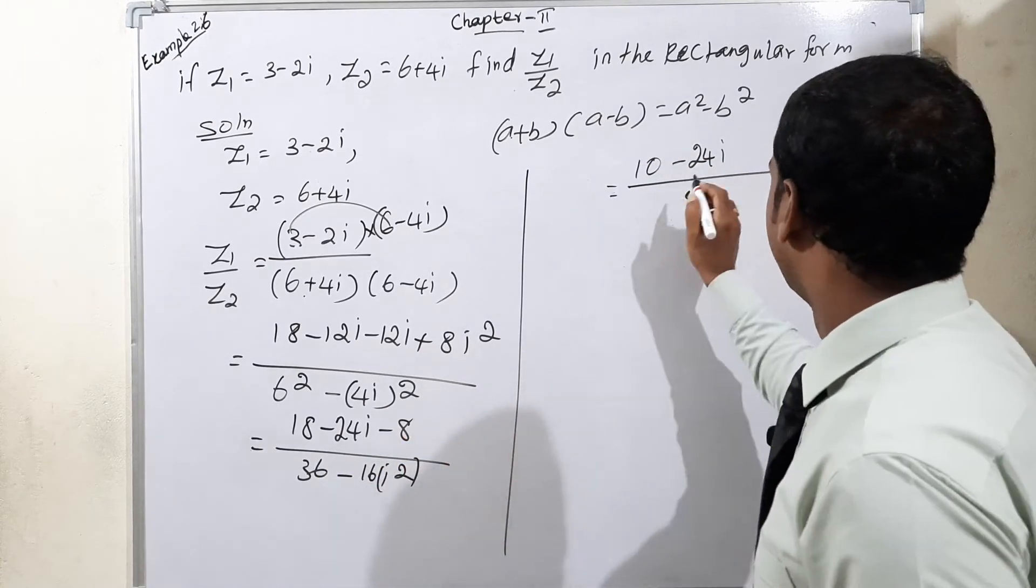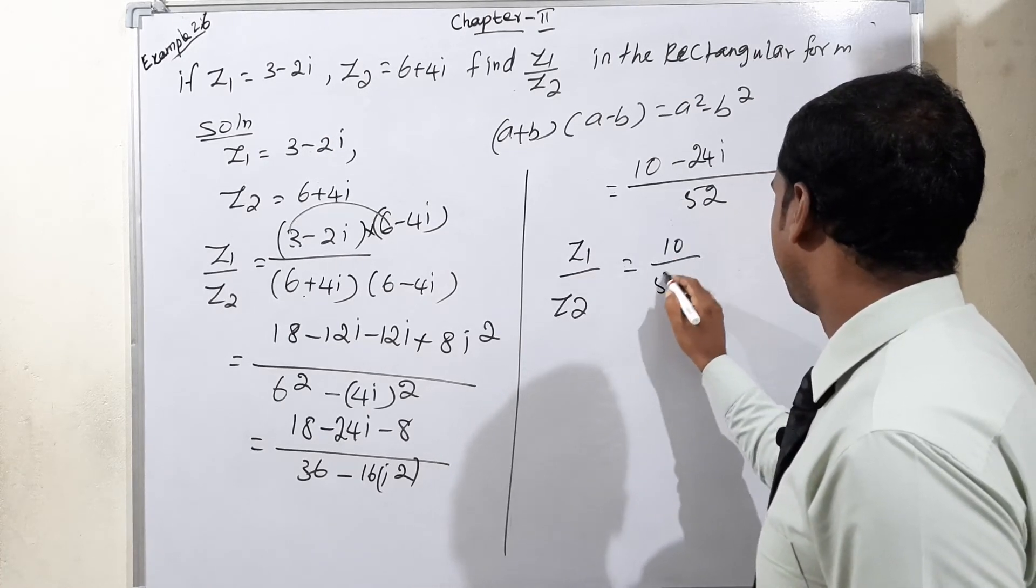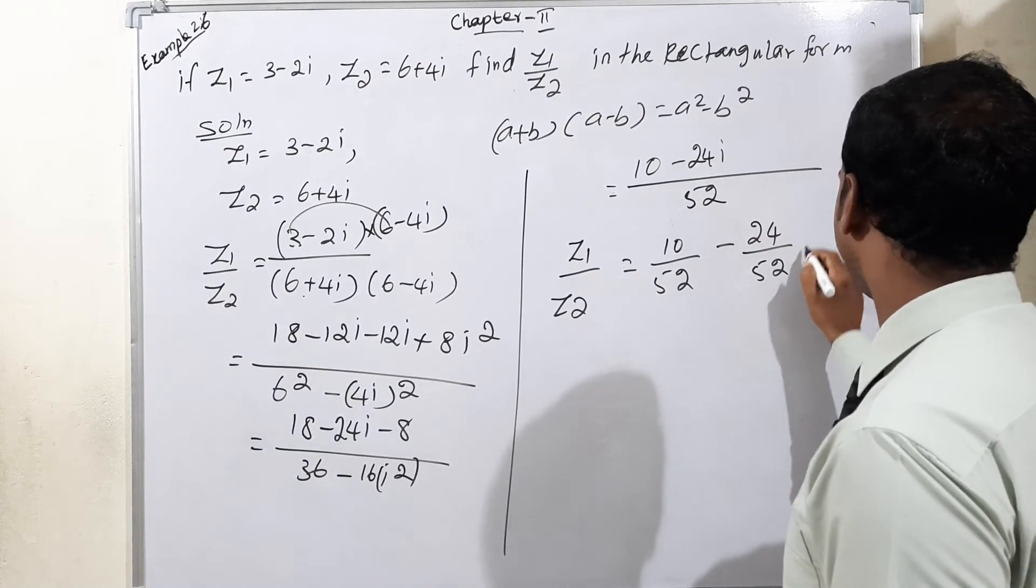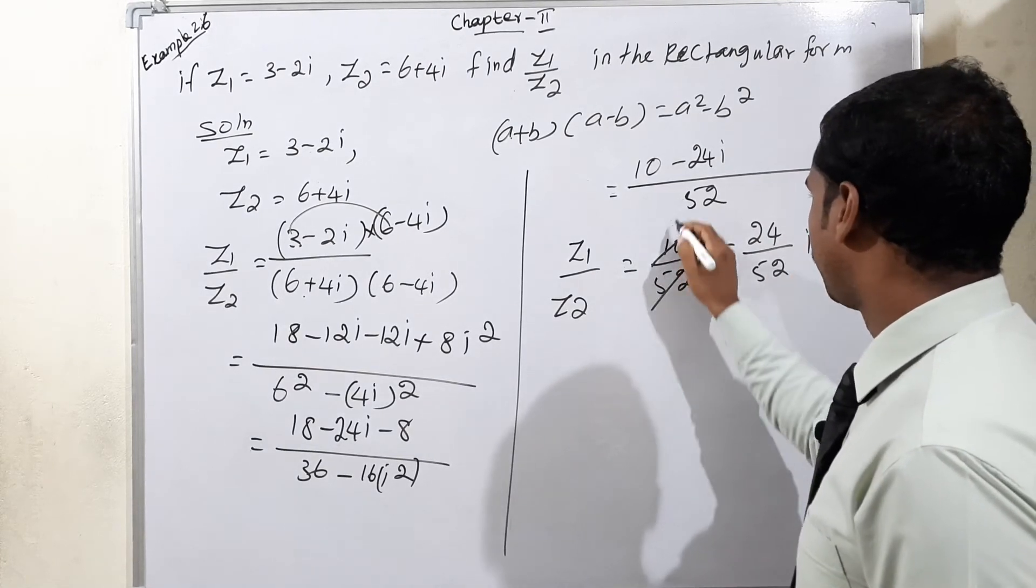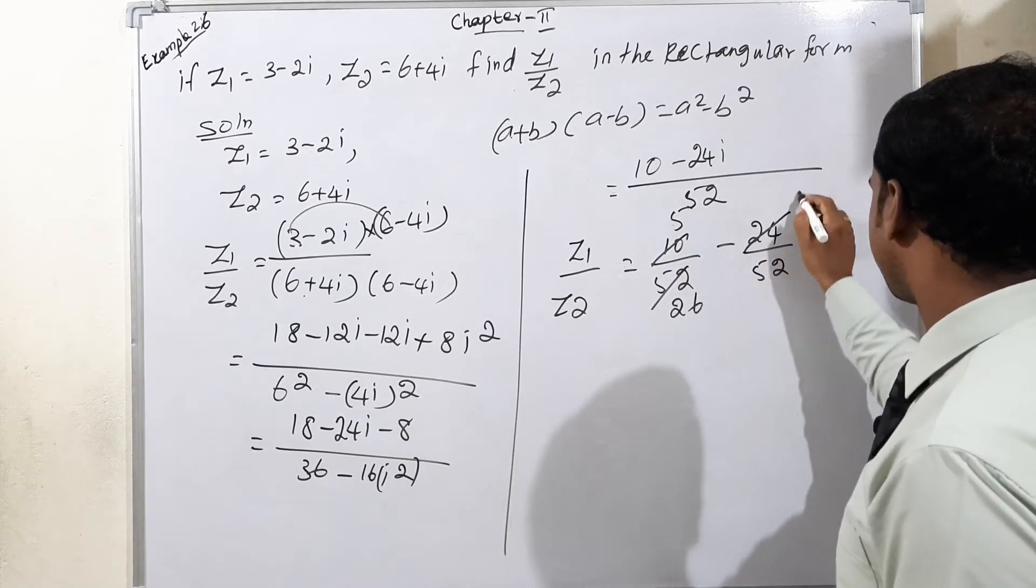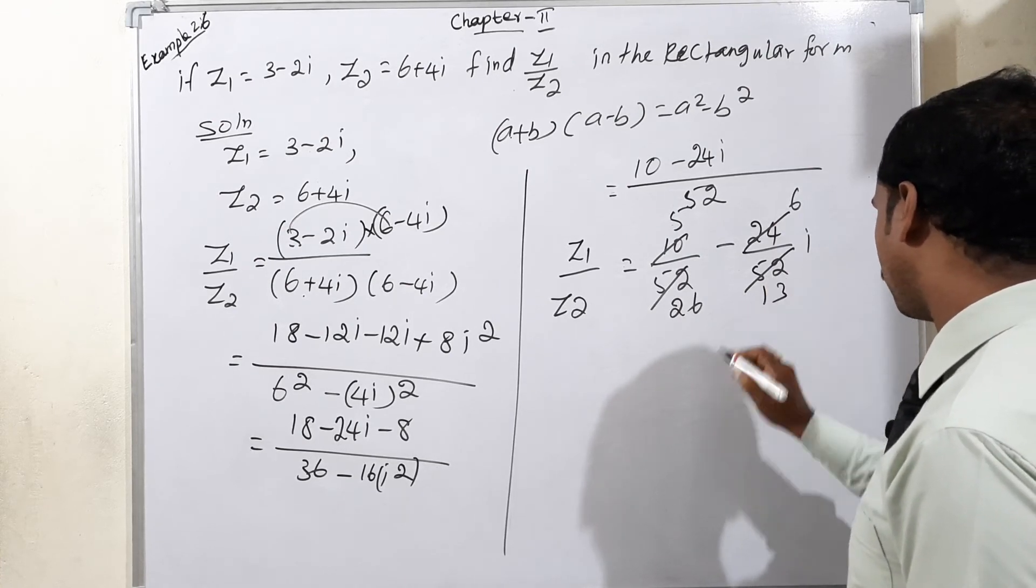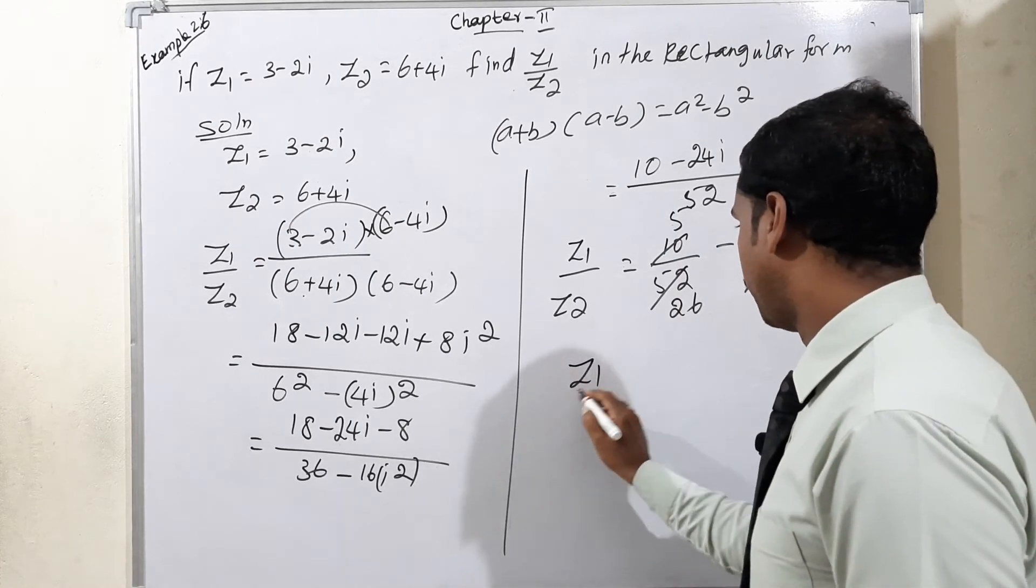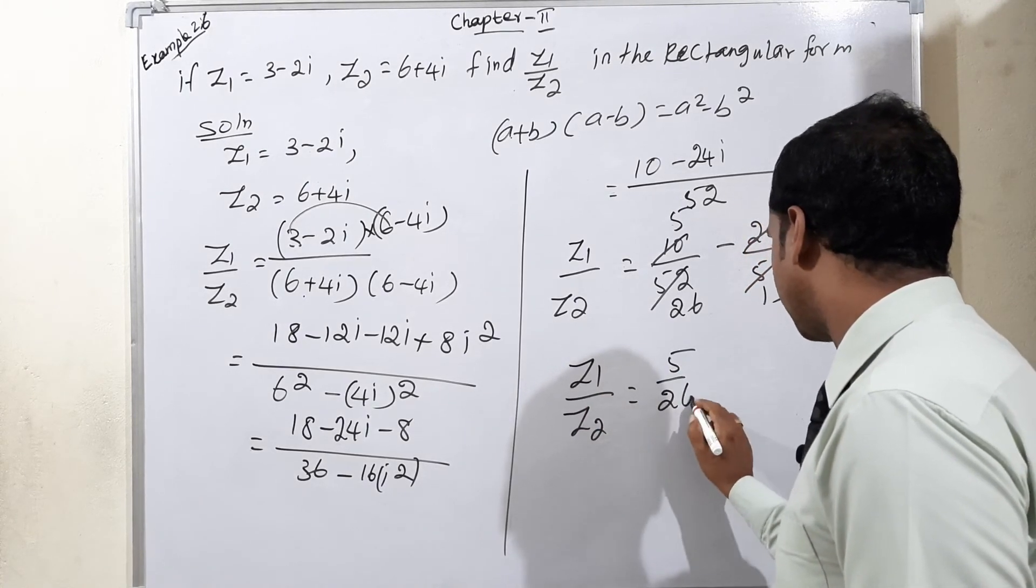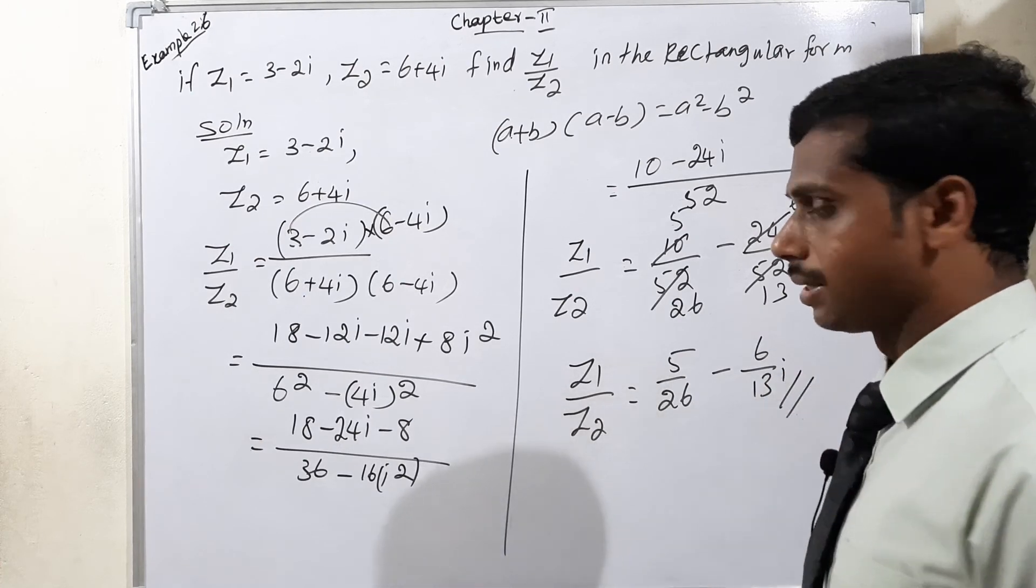Here, final time, z1 by z2 is equal to 10 by 52 minus 24 by 52 into i. So 10 by 52 cancel means 5 times, this is 26. Next, 6 fours are 24, 1 four is remaining, 1 balance there, 12. 3 fours are 12. Therefore, final answer: z1 by z2 is equal to 5 by 26 minus 6 by 13. This is our final answer.